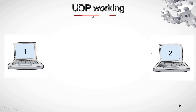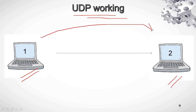Here is a basic pictorial demonstration of how UDP works. It does not have any sort of synchronization, acknowledgement, or verification. If your PC wants to send a file to another PC, it will simply send the file. You won't get any confirmation whether or not that file has reached the PC at the other end. If it has reached, it has reached; if it hasn't, it hasn't. You won't get any confirmation that the file has been received.